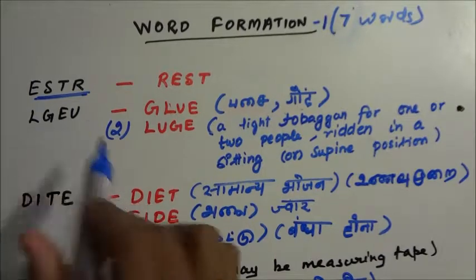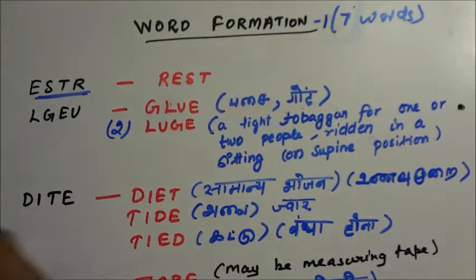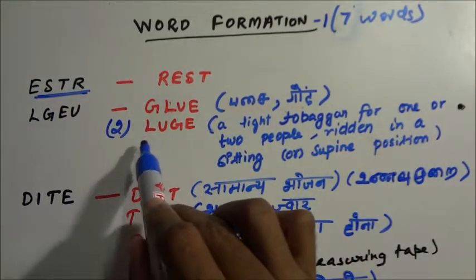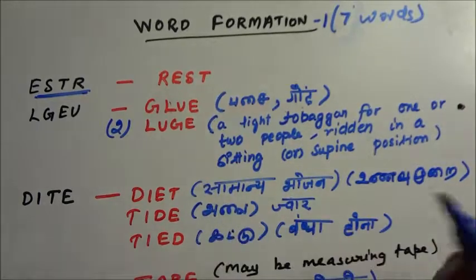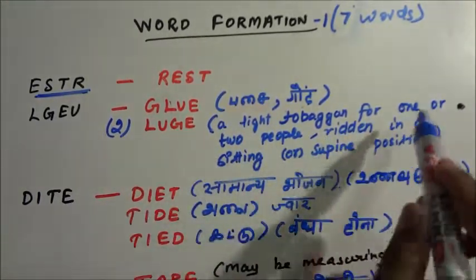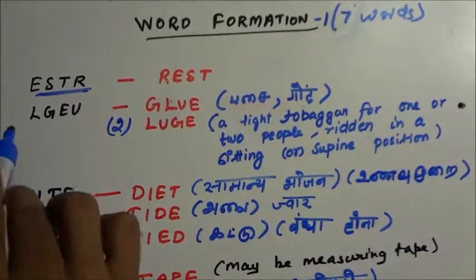Likewise L-D-L-G-E-U - we can form two words, two meaningful words. One is GLUE and another one is LUGE. GLUE means paste (in Hindi: gond), something we use to paste things. LUGE is a light toboggan for one or two people ridden in a sitting or supine position. Two words can be formed from this.